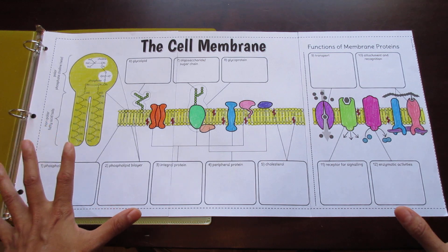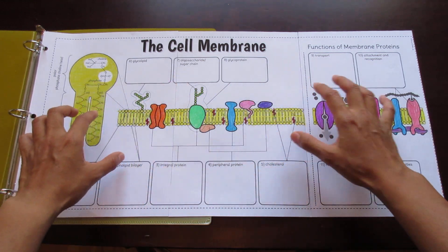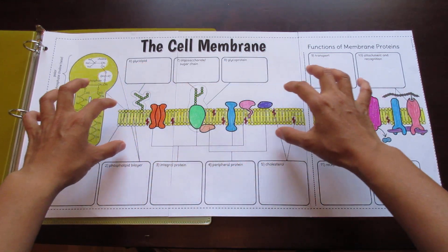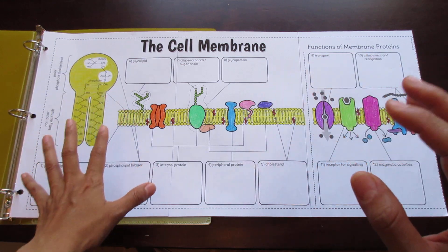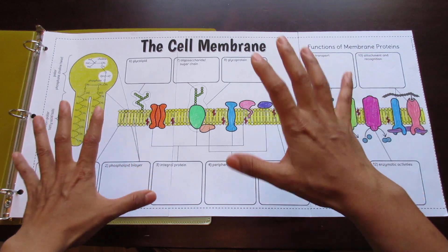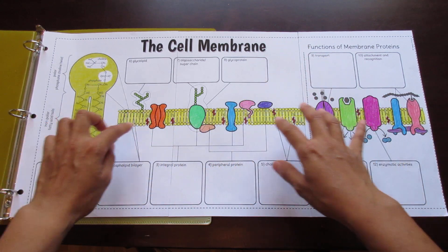Now, let's take a look at the specific features. Here in the center, you have your typical cell membrane showing the different types of glycolipids, glycoproteins, peripheral proteins, and integral proteins in cholesterol with the phospholipid bilayer.